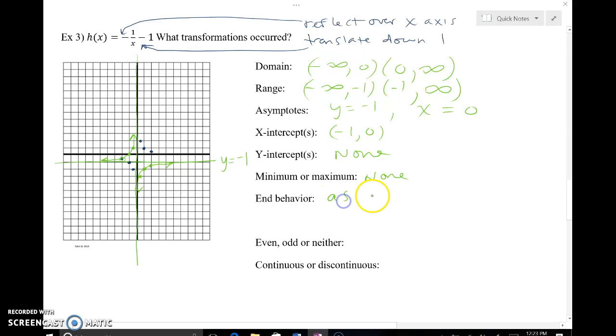End behavior. As x approaches negative infinity, that means down and to the left, my curve right here is getting really close to negative one. As x is approaching positive infinity, that's way out to the right, my y values are heading up to negative one. I do have a gap here in the middle where I'm not connected, so that makes for a discontinuous function.